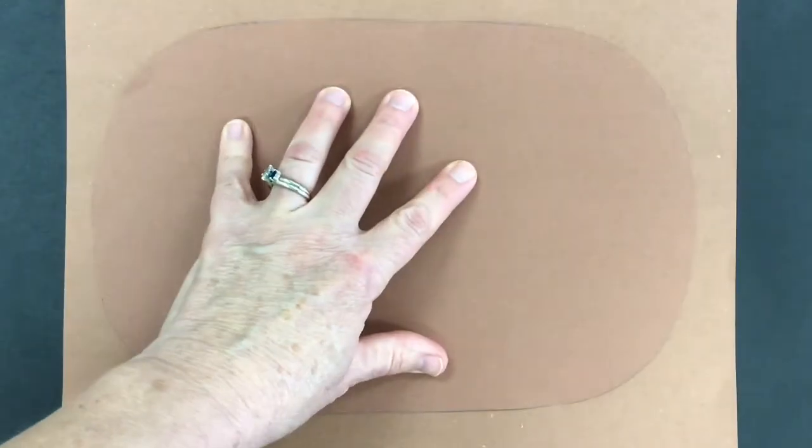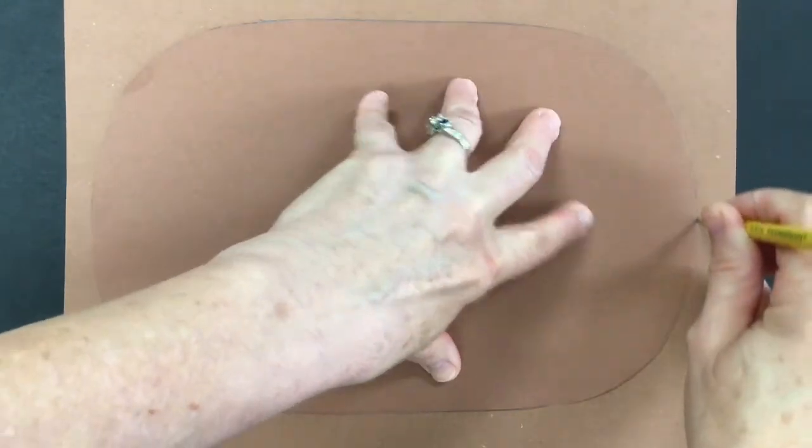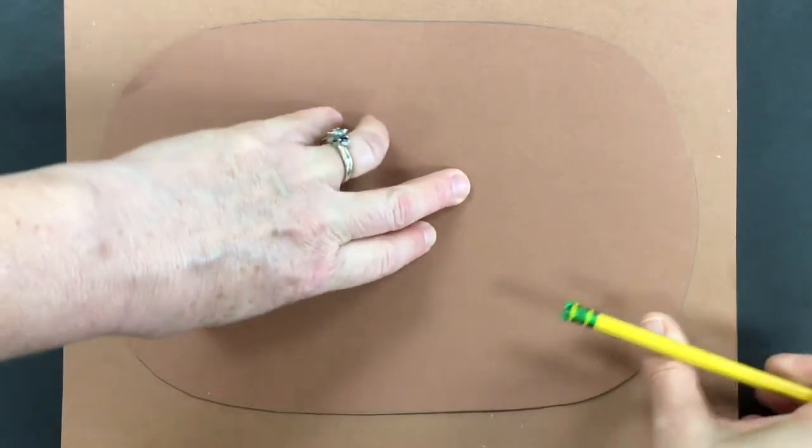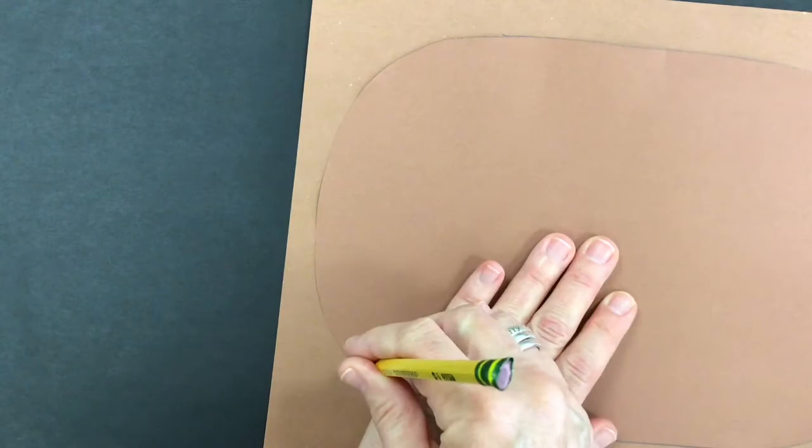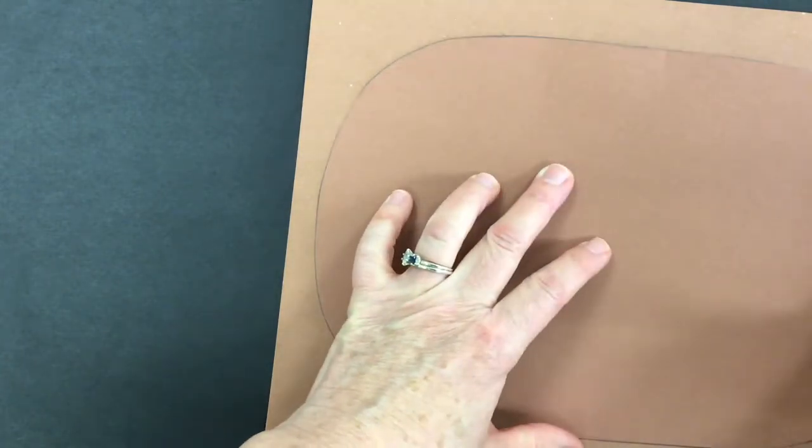You'll hold it down with your hand and you will trace around with a pencil. If you make your pencils stand up tall like a soldier, it will be easier to trace. Now you have another one that you can cut out.